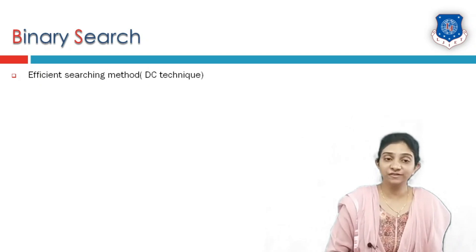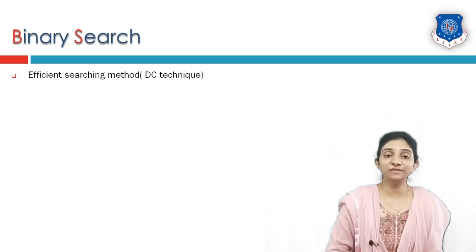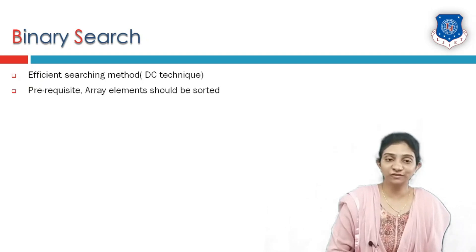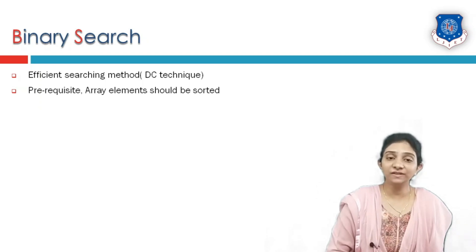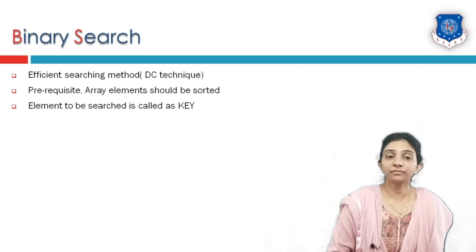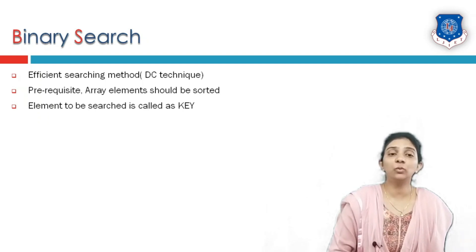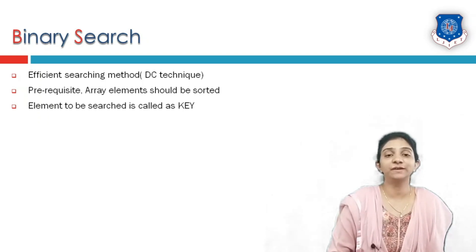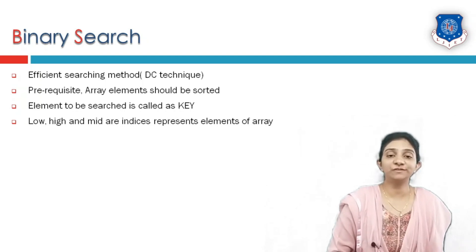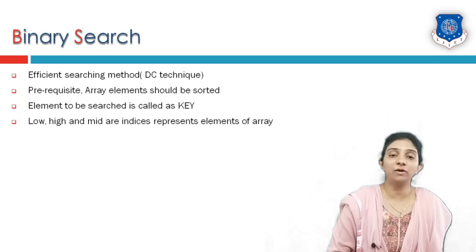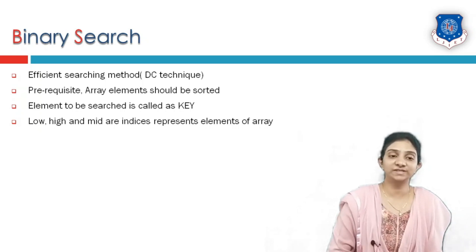Binary search is an efficient searching technique which is based on the divide and conquer strategy. The prerequisite to perform binary search is that the array or list of elements must be sorted. The element you want to search is called the key element. There are three indices which represent the lowest, middle, and high — or the ending — of an array respectively.